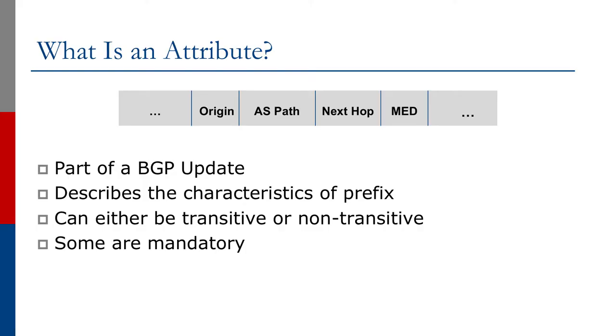This is really useful information for the neighbouring AS or for other autonomous systems around the network. Some of these attributes are transitive — in other words, they're passed from autonomous system to autonomous system. Other attributes are non-transitive, meaning they exist just within the AS or are only used between two autonomous systems.